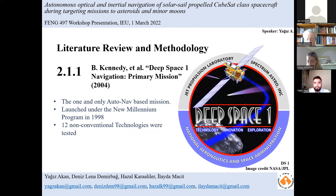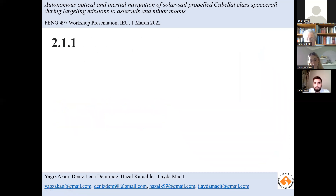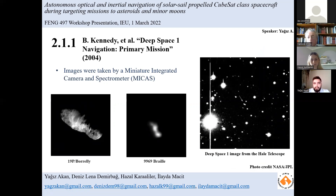Deep Space One tested 12 new technologies. The most important ones were autonomous onboard optical navigation, a miniature integrated camera and spectrometer, and a solar electric ion propulsion system. The photo on the left shows Comet Borrelly taken by Deep Space One using the miniature integrated camera and spectrometer — the highest quality comet photo ever. However, for the asteroid Braille, conditions were not ideal due to technical difficulties including a software issue, and the vehicle passed within 36 kilometers of Braille.